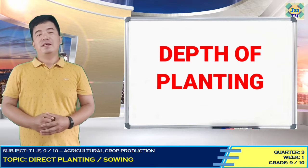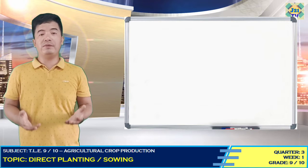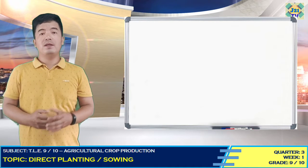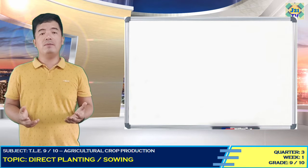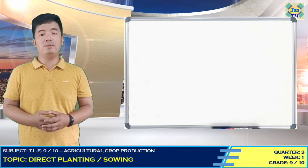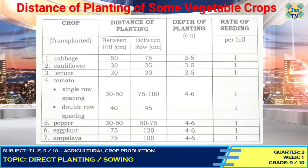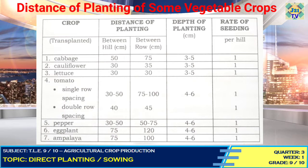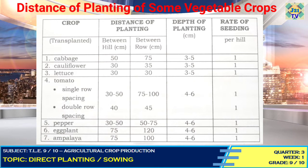Depth of planting. In places where there is heavy rainfall, seeds should be planted shallow, as planting deeply during rainy season will cause seeds to decay. As a rule, seeds should be planted at a depth that allows them to emerge from the ground before the reserved food in the seed is fully consumed, while also affording good anchorage for the roots. The size of seeds partly determines the depth at which they are to be planted. We now have a table showing the distance of planting for some vegetable crops — columns include: crop name, distance of planting between hills and rows, depth of planting, and rate of seeding.